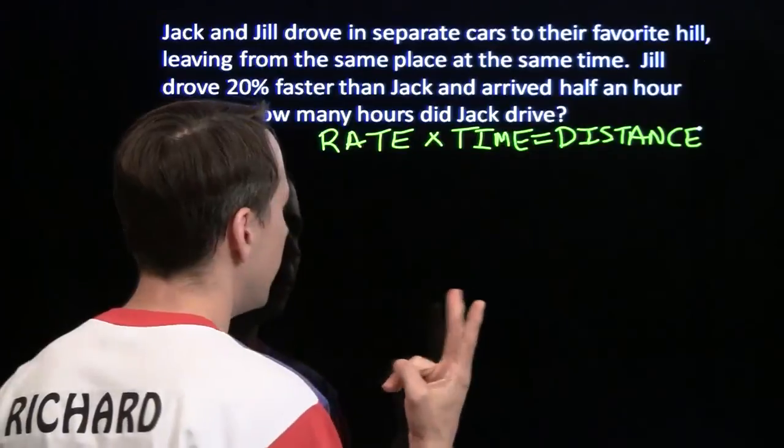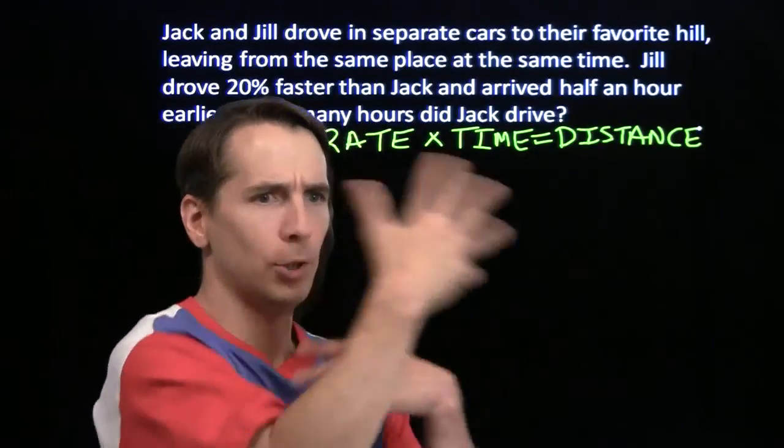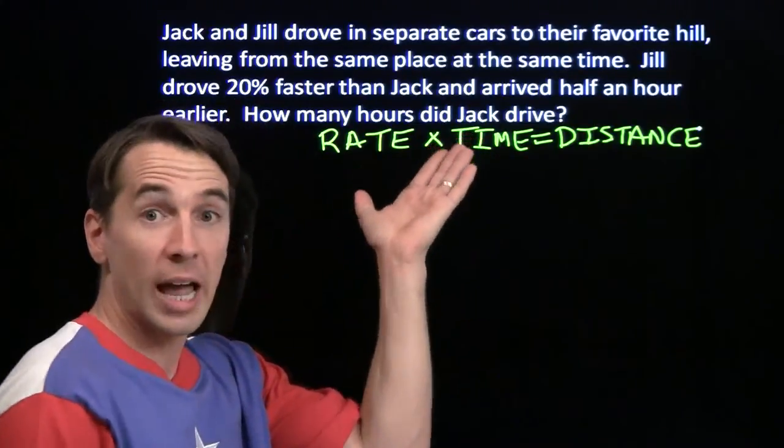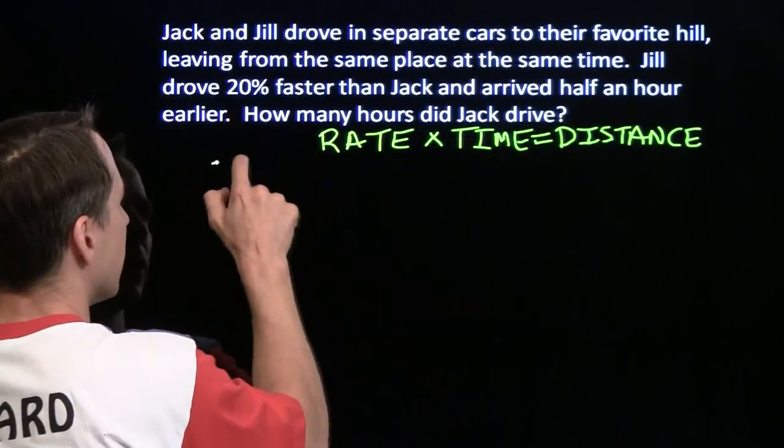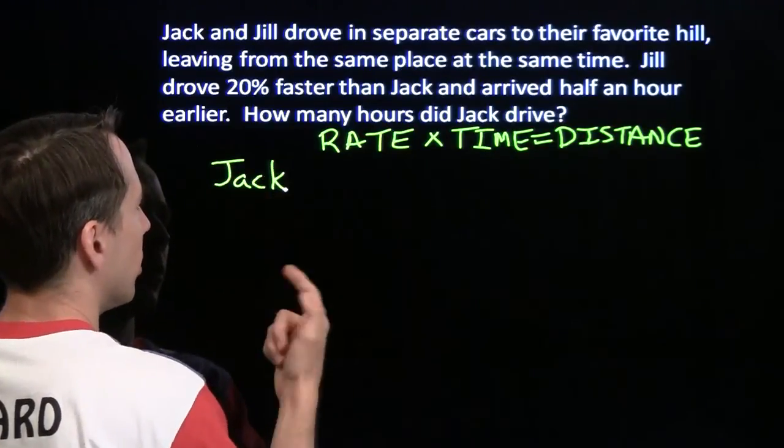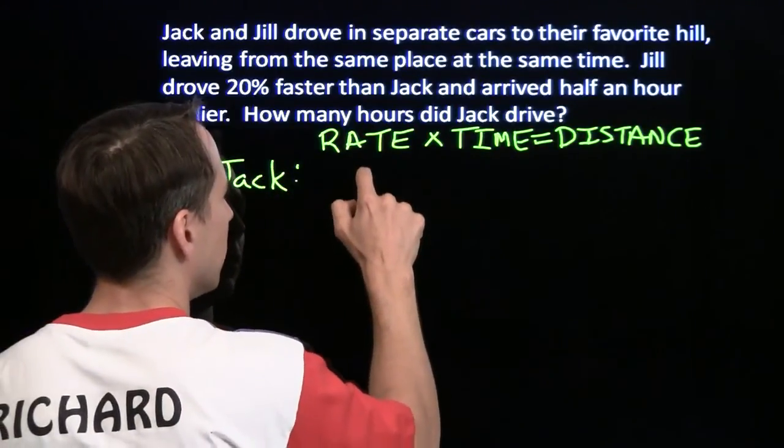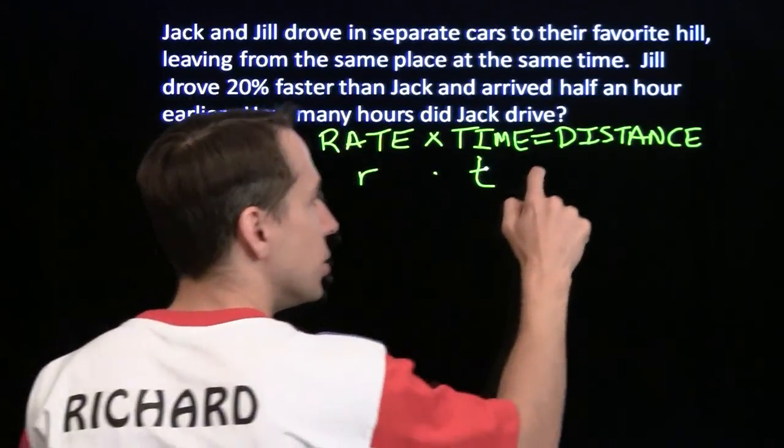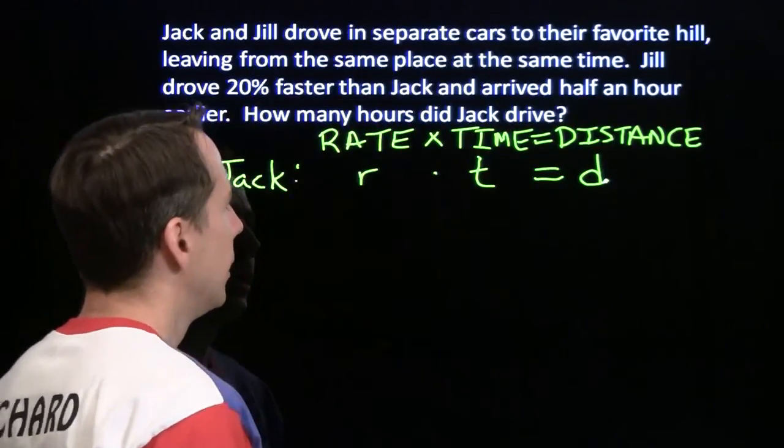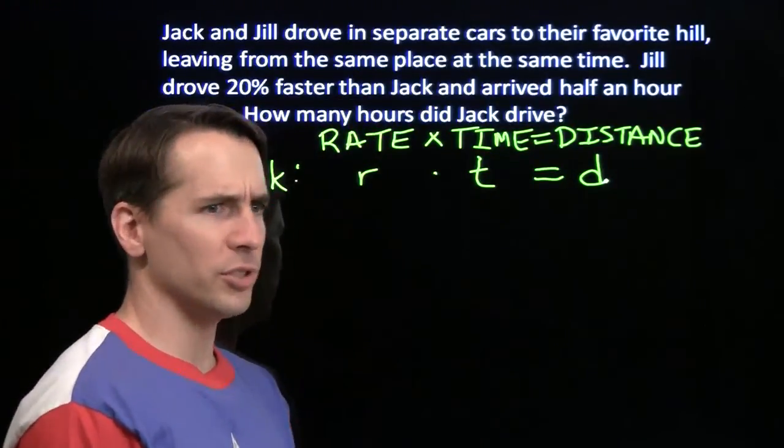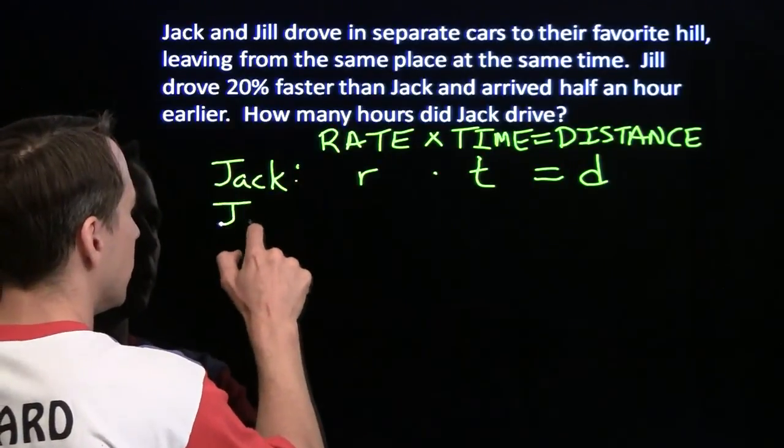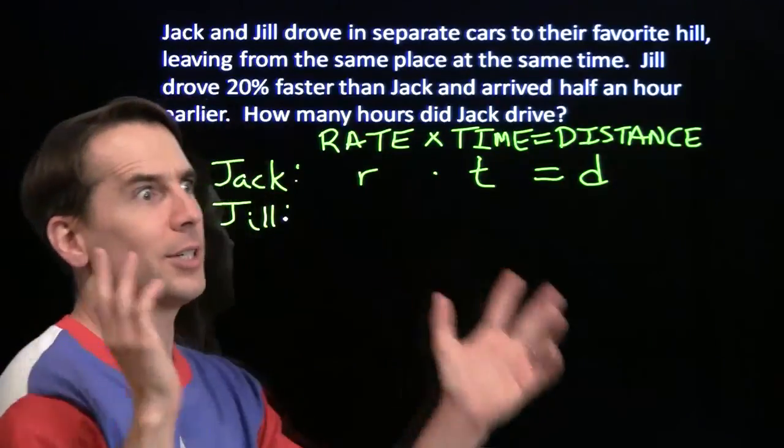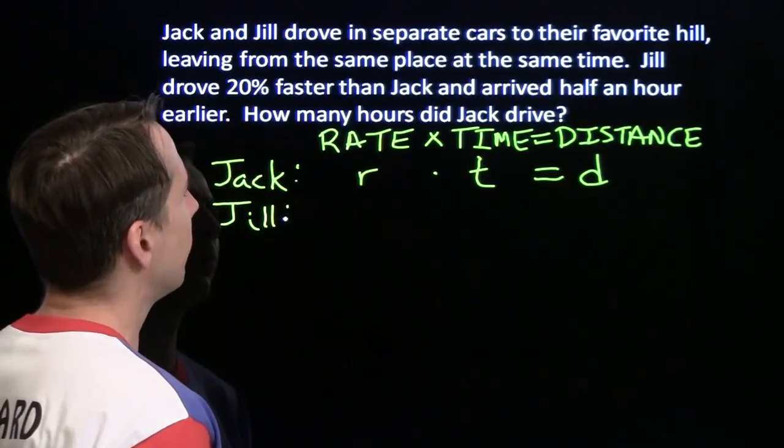Fortunately, here we have two drivers, we have two rates, two times, and I'm just going to focus on one of them. I'm going to focus on Jack first because the problem asks about Jack. I'm going to say that Jack's rate is r, Jack's time is t, and Jack's distance is d. Now we already have three variables, and we've got to deal with Jill too. We don't want to put down three more variables, because then we'll have six variables and six is too many.